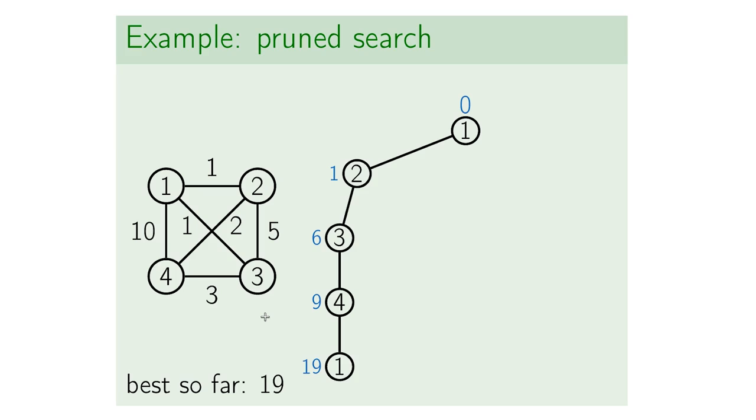And then we return back to vertex one because we already visited all other vertices. So this is the first full cycle that we discovered. Its total length is 19.